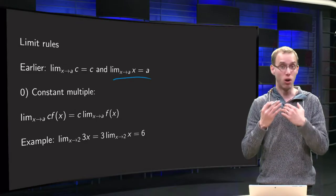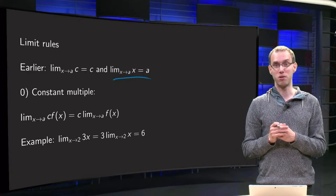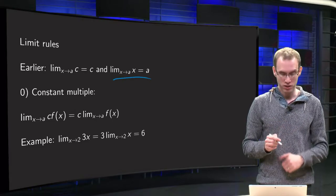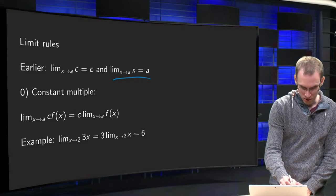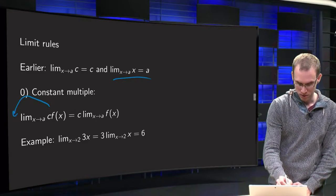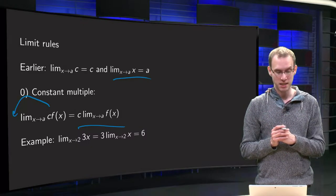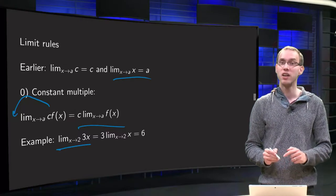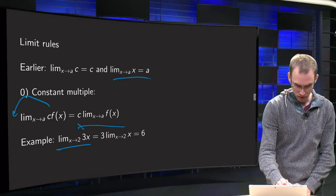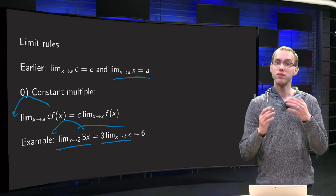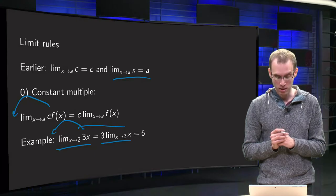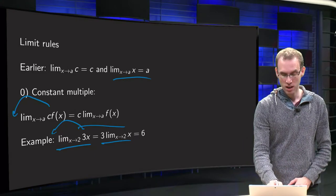Using those two, you can compute a lot of other limits. First of all, we have rule zero: a constant multiple. If you have scalar c and if the limit x to a of f exists, then we can take the c out in front. So we get this limit, always if the latter limit exists. For example, if you have limit x goes to 2 of 3x, you can take the 3 in front — 3 times limit x to 2 of x. That is a basic limit, so that limit equals 2, and we get 3 times 2 equals 6.